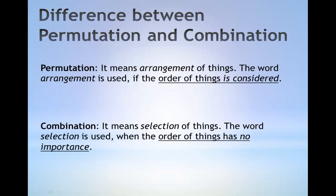Difference between permutation and combination. In permutation, the key idea is to arrange things. The word arrangement is used. In the case of permutation, the order of things is important.